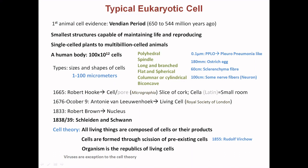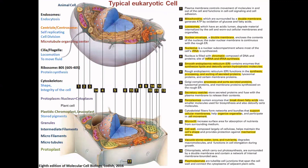Coming to the ultrastructure of the cell — this is the animal cell and this is the plant cell. The cell is protected and all internal components are preserved by a structure called the plasma membrane, which is selectively permeable and controls the movement of substances across it. It is also involved in functions like cell signaling, and the cell attaches to the extracellular matrix or to other cells — this is called cell adhesion.